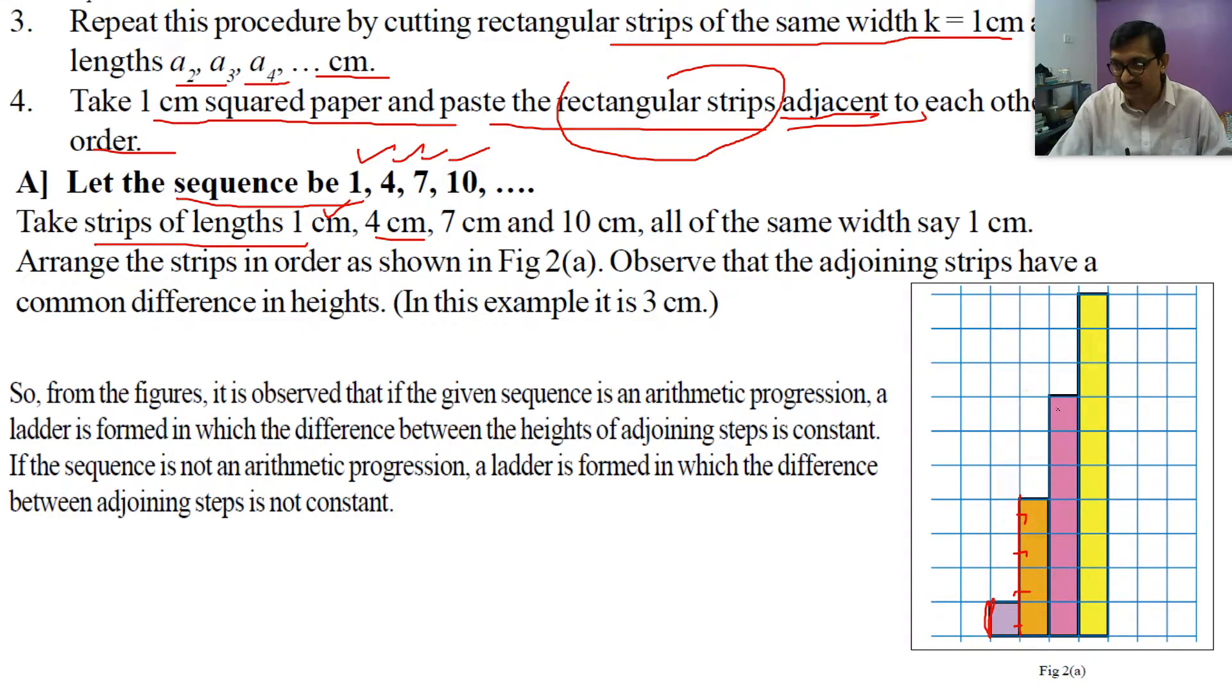This is the 7 centimeter length strip, and the one which appears highest is 10 centimeter length. If you don't believe, you can count all these squares. This is 10, this is 1, this is 4, this is 7, and this is 10.